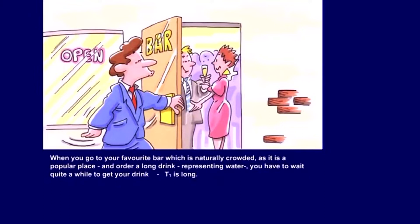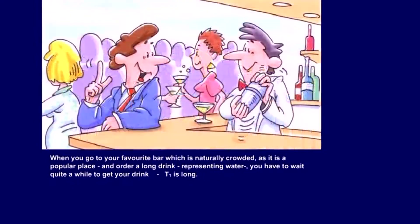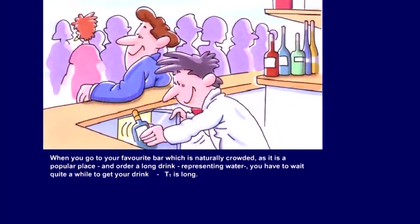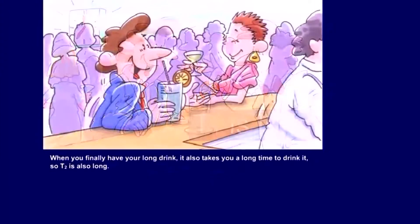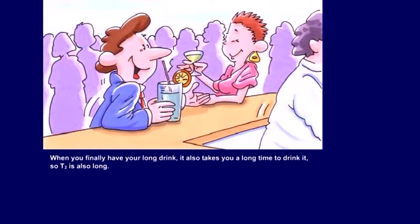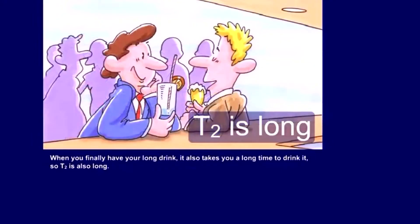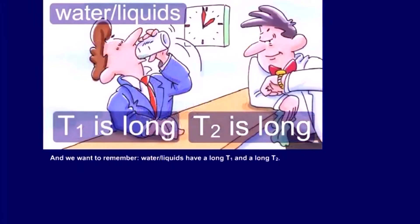When you go to your favorite bar, which is naturally crowded as it's a popular place, and order a long drink representing water, you have to wait quite a while to get your drink — T1 is long. When you finally have your long drink, it also takes you a long time to drink it, so T2 is also long. So we want to remember: water and liquids have a long T1 and a long T2.